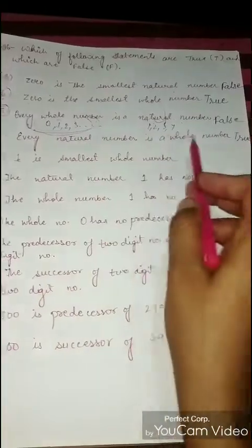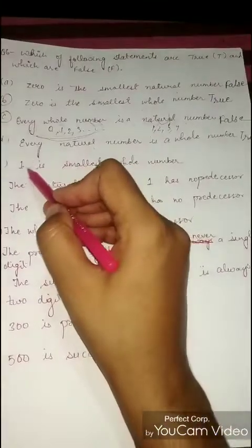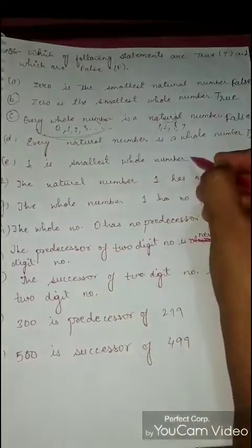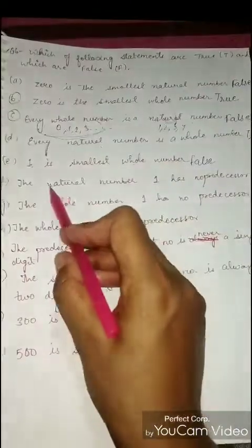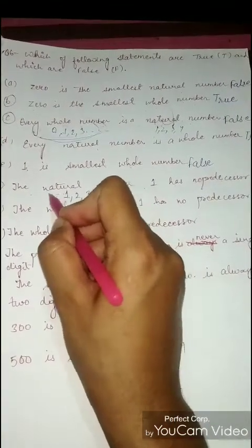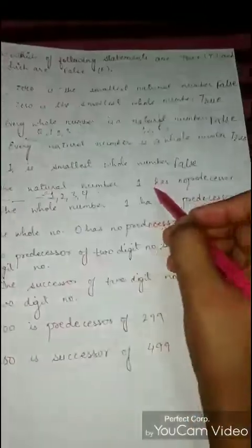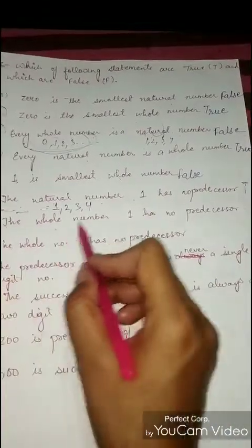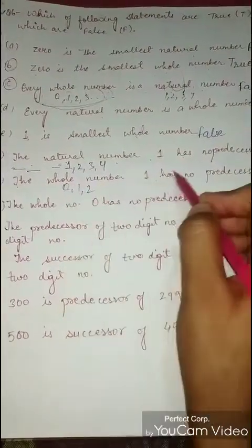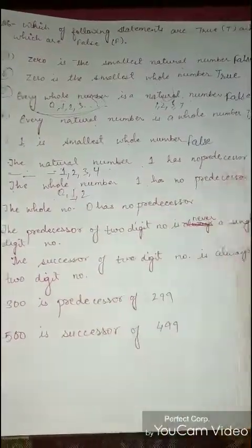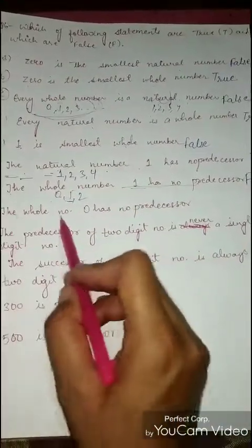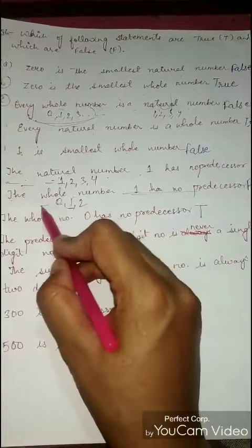Every natural number is a whole number - this is True. Next: the smallest whole number is 1. No, we already established zero is the smallest whole number, so this is False. The natural number 1 has no predecessor - natural numbers start from 1, so there is no number before it, True. The whole number 1 has no predecessor - whole numbers start from 0, so 0 is the predecessor of 1, False. The whole number 0 has no predecessor - True, nothing comes before 0.